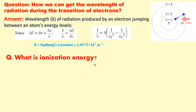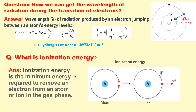What is ionization energy? Ionization energy is the minimum energy required to remove an electron from an atom or from an ion in the gas phase. If we have a neutral atom and one electron is removed from it, the atom gains a positive charge. For example, if we have argon, it becomes Ar⁺ after one electron is removed. This is known as the ionization energy.